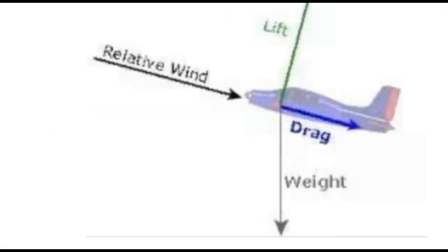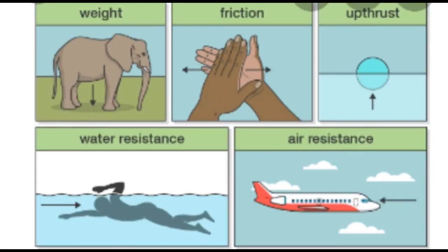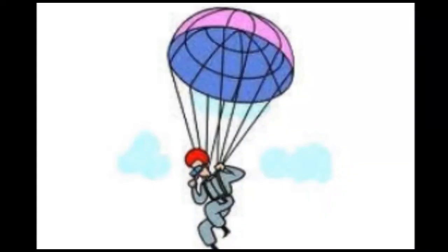Let's talk about air resistance. This is also a kind of force, like friction, weight, upthrust, and water resistance. It allows objects to fly in the air because air is made up of gases, and the molecules in these gases bump into moving objects, causing a force — air resistance — to act against the motion. At low speeds this is only a small force, but at higher speeds it becomes much larger.